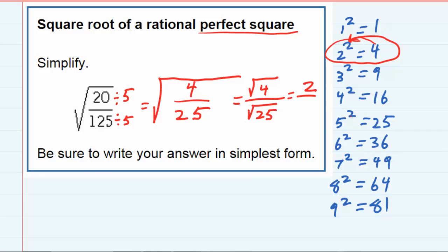And the square root of 25, since 5 squared is 25, the square root of 25 is 5, again going in the other direction.